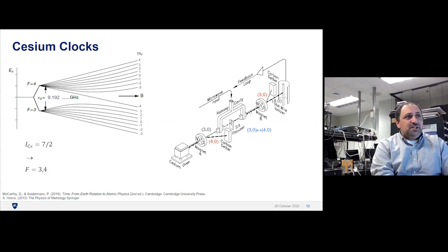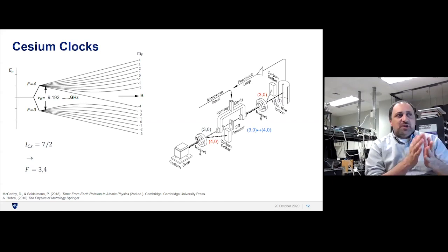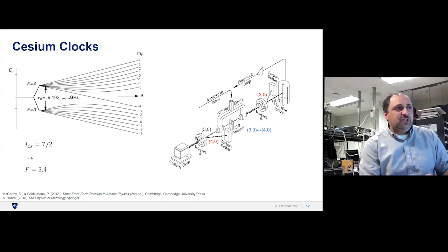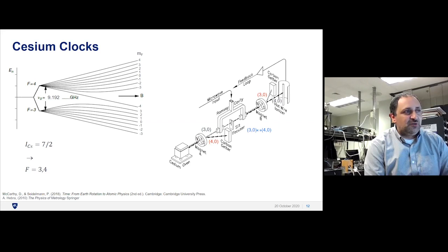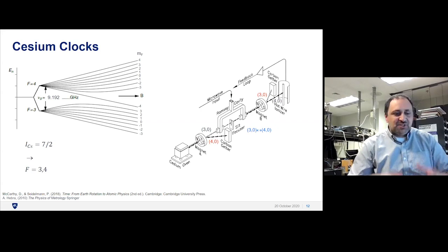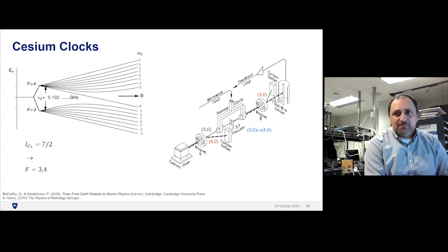Now you kick out the three zero ones and send your four zero ones to this detector. When every atom hits it, that creates an electrical current. That electrical current is used to control the microwave frequency. Similarly with what happened before, you want to maximize the current. You tune your microwave frequency to get the most current. You tune the frequency going into your Ramsey cavity to maximize your current. When it's maximized, you know you're at the right frequency because you're manipulating that transition between those two states.